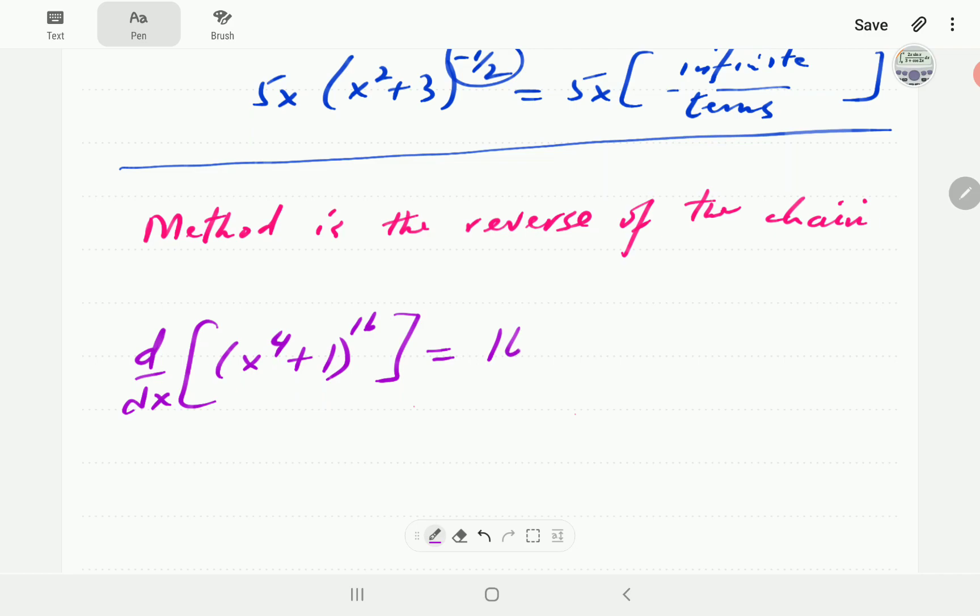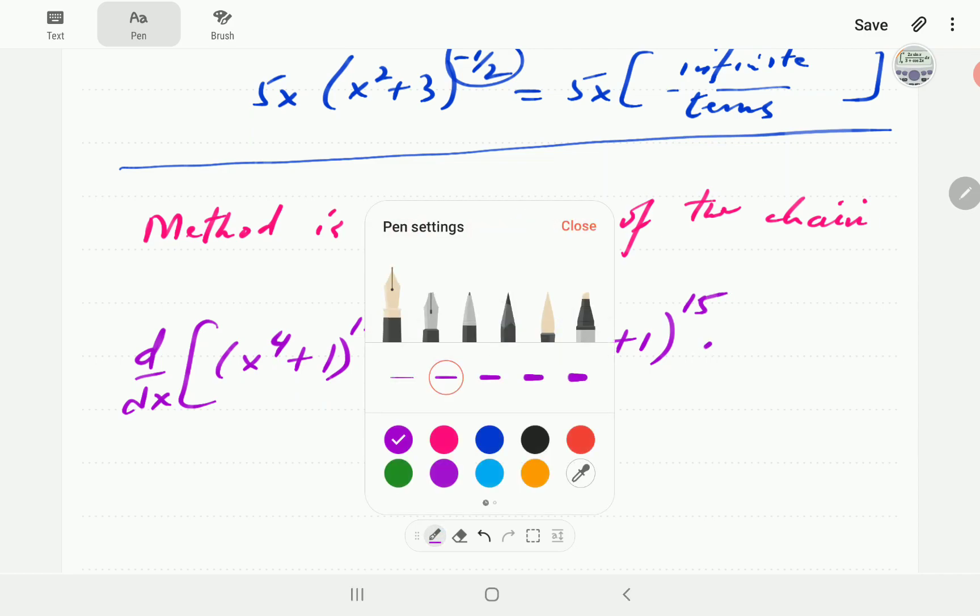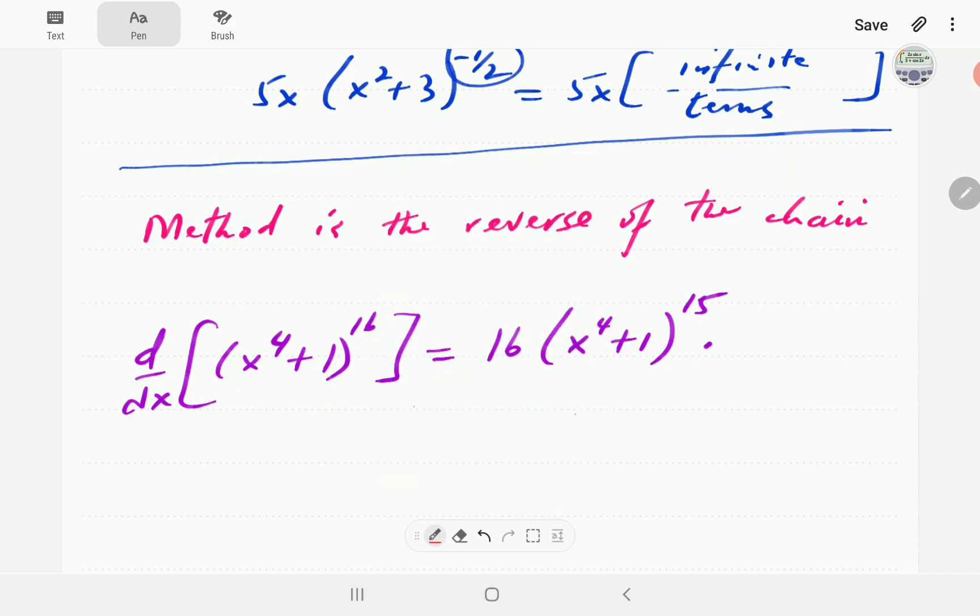We can differentiate this by first differentiating the power. We multiply by the power, we subtract 1, and then after that, we're going to multiply by the derivative of the function inside here, which is the inner function. That is going to be 4x to the power of 3.